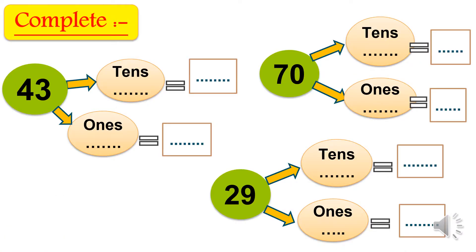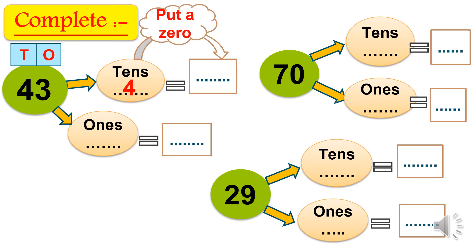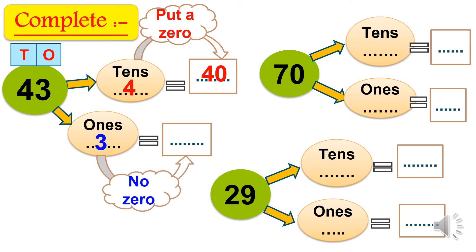Let's complete. First number: forty-three. We put our places: ones and tens. Three is in the ones place, four is in the tens place. In tens: four, its value equals forty — in tens we put a zero. In ones: three, its value equals three — there is no zero in ones.